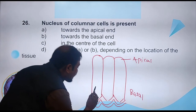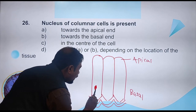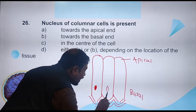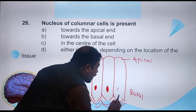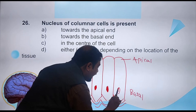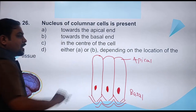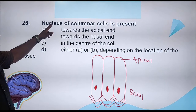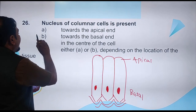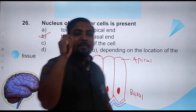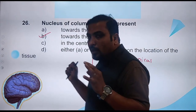You all know the diagram. The nucleus is here — nucleus is oval-shaped. This nucleus is towards the base of the cell, in basal position. The question asks about the nucleus of columnar cells — the correct answer is it will be towards the basal end. It will not be the apical end.